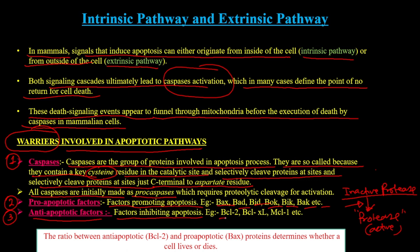The ratio between the anti-apoptotic BCL-2 and the pro-apoptotic Bax proteins determines whether a cell will live or die by apoptosis.